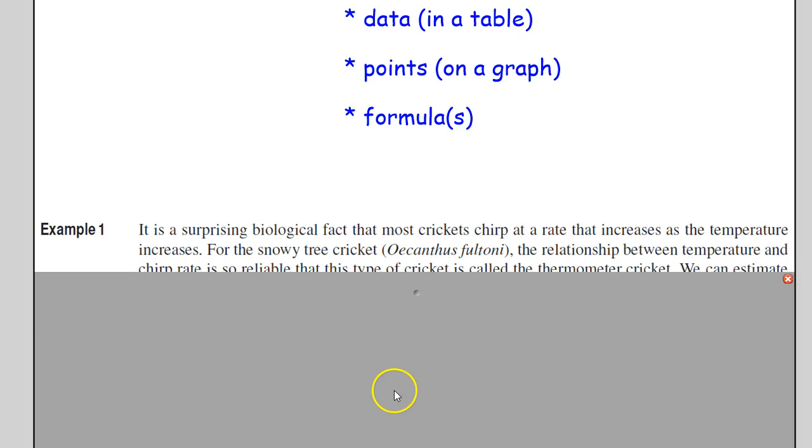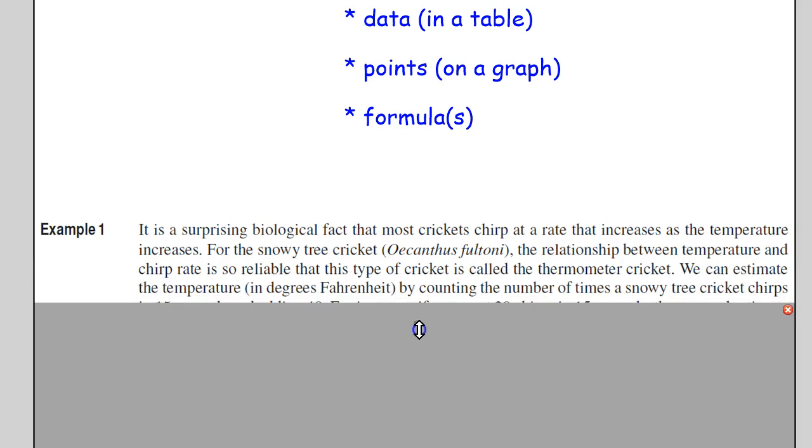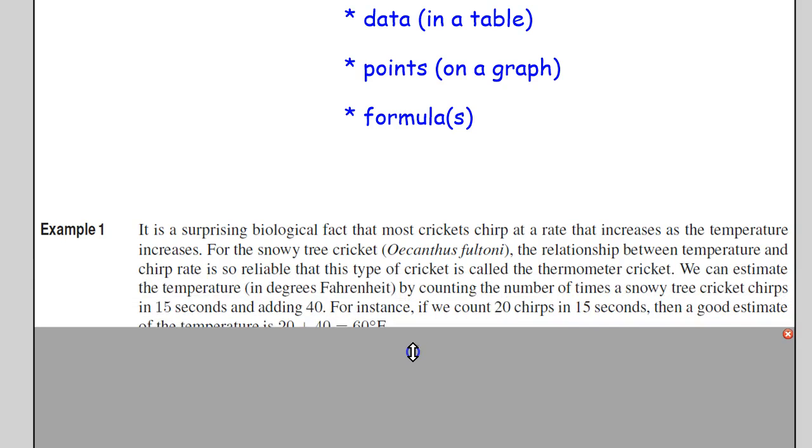Let's take a look at an example of quantities and how they are depending on each other in its form of a function. This is from the book, Example 1. It's a surprising biological fact that most crickets chirp at a rate that increases as the temperature increases.